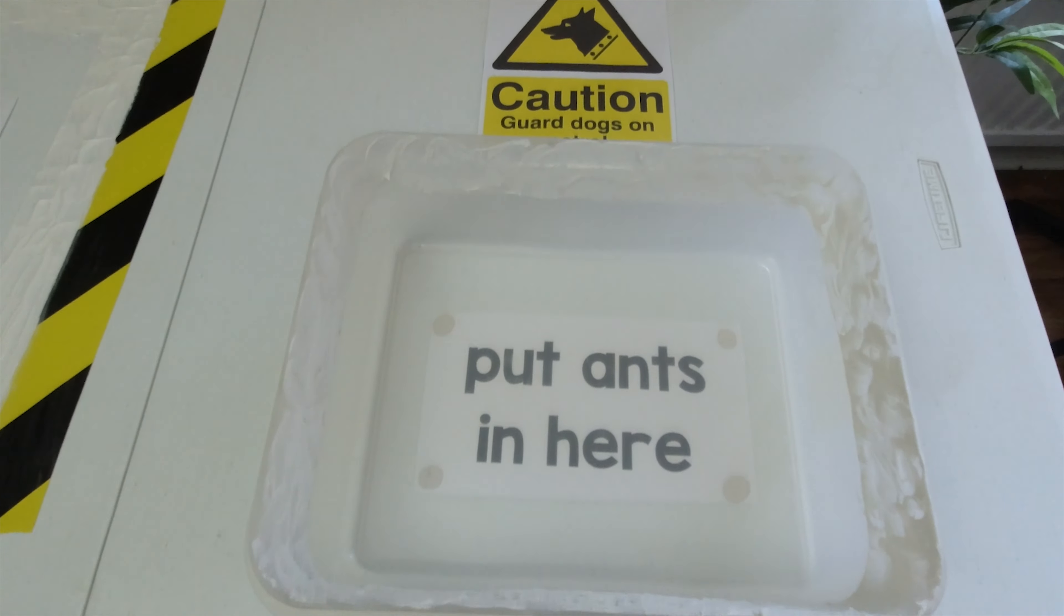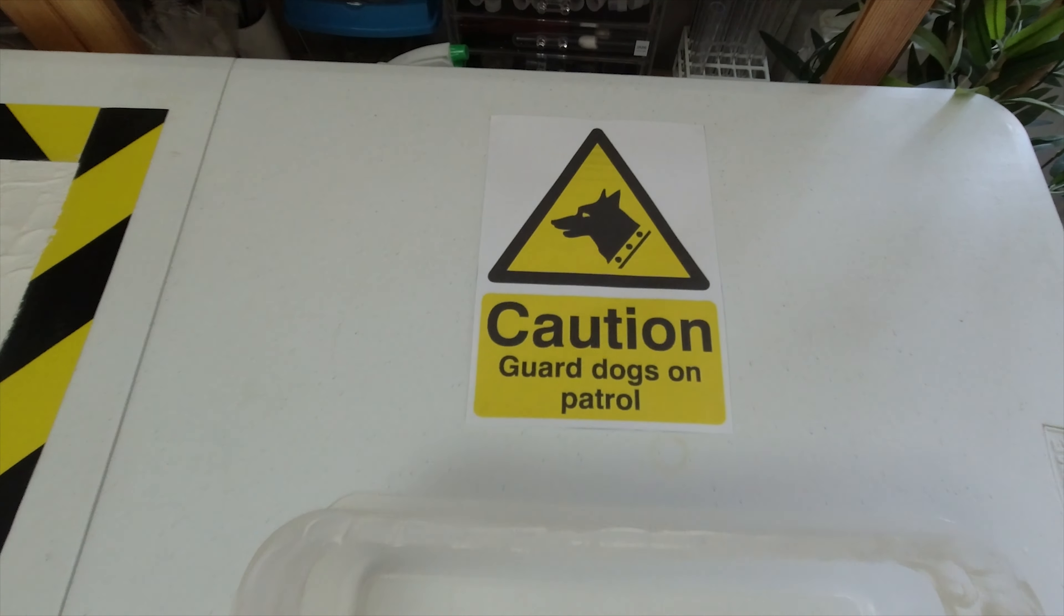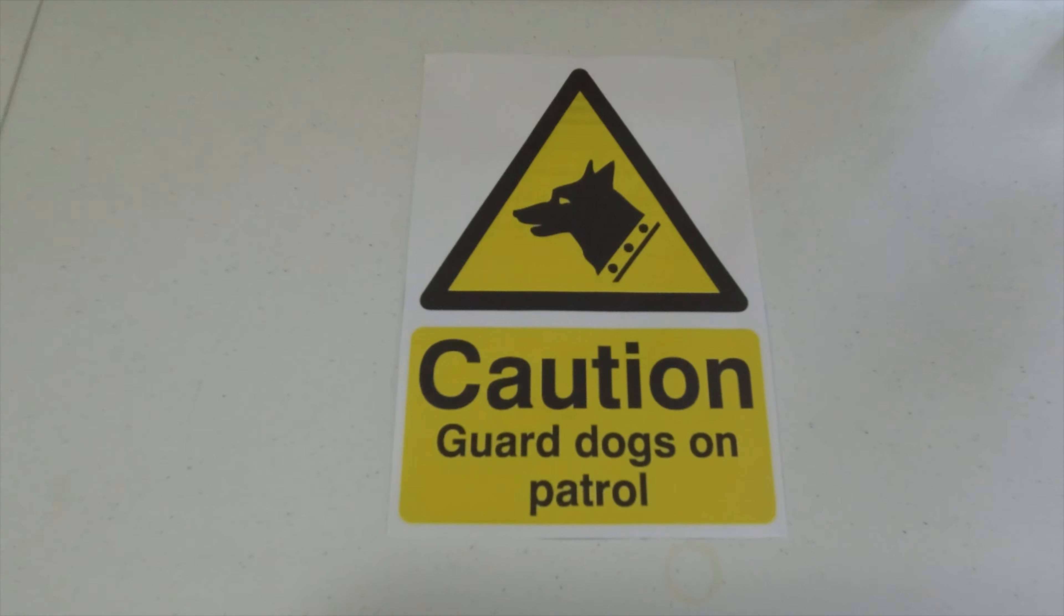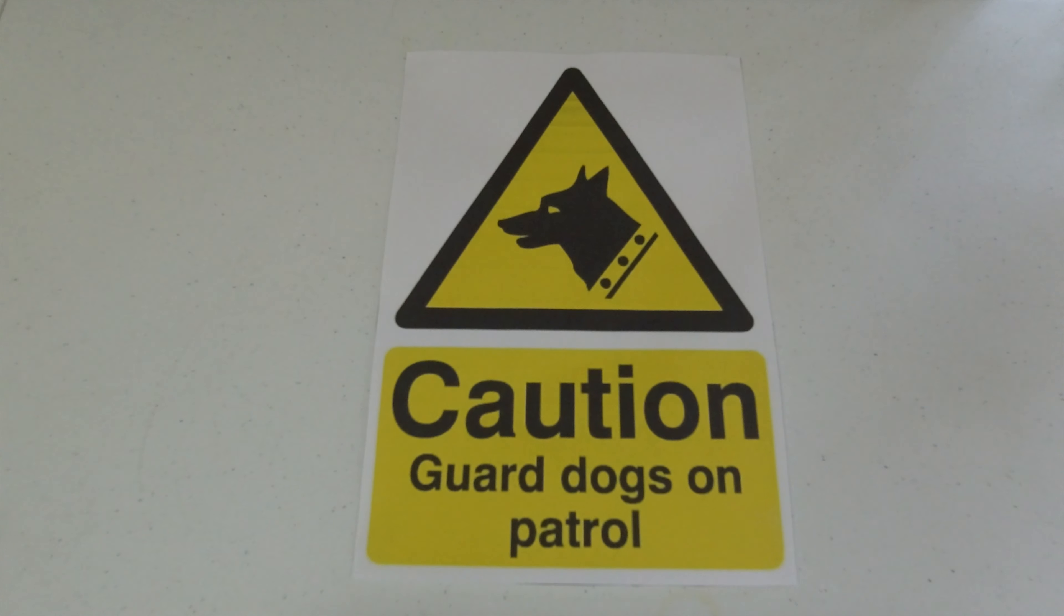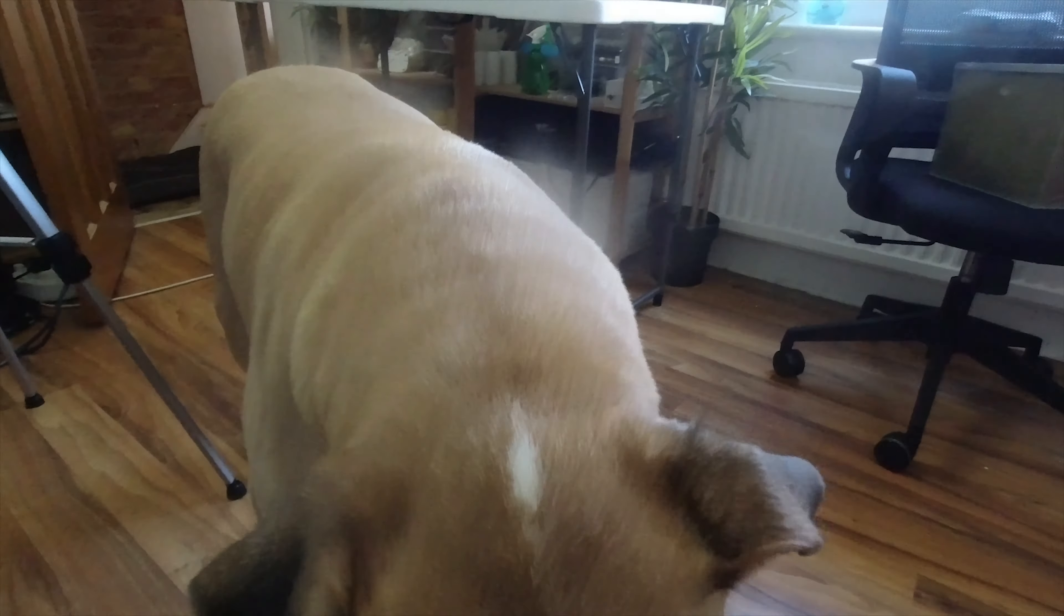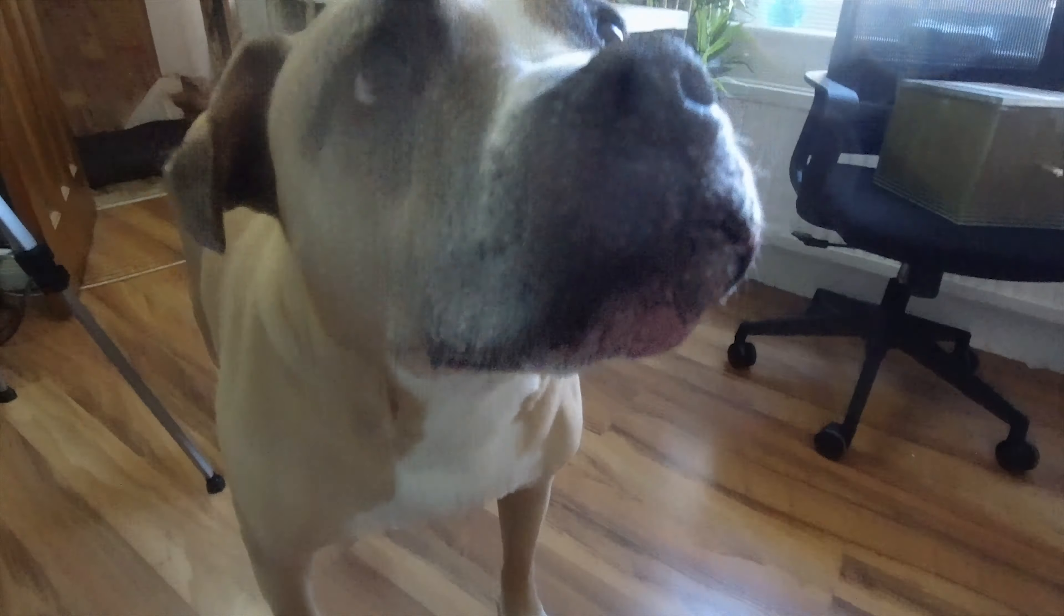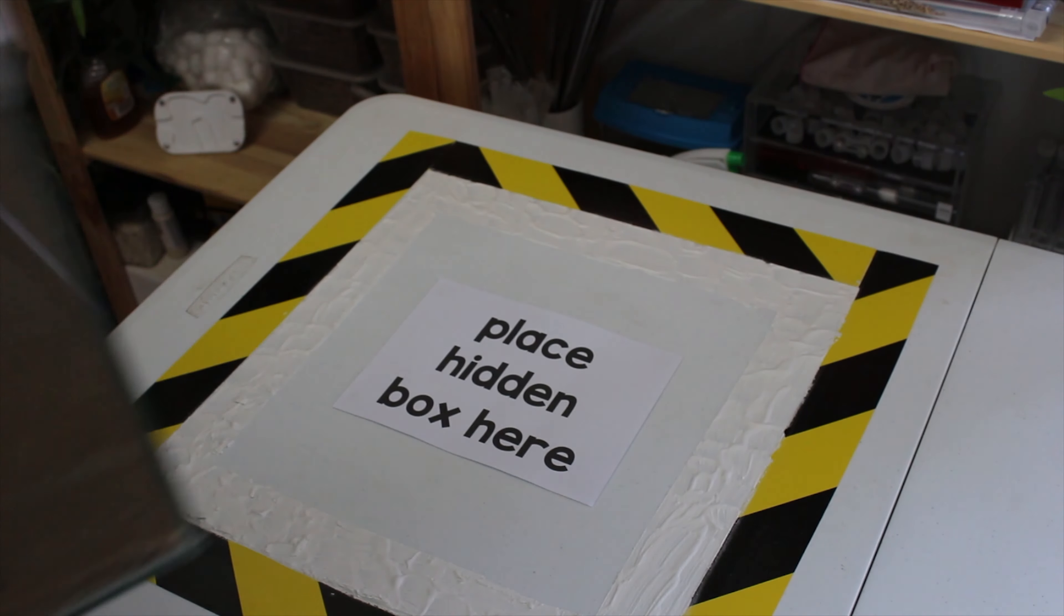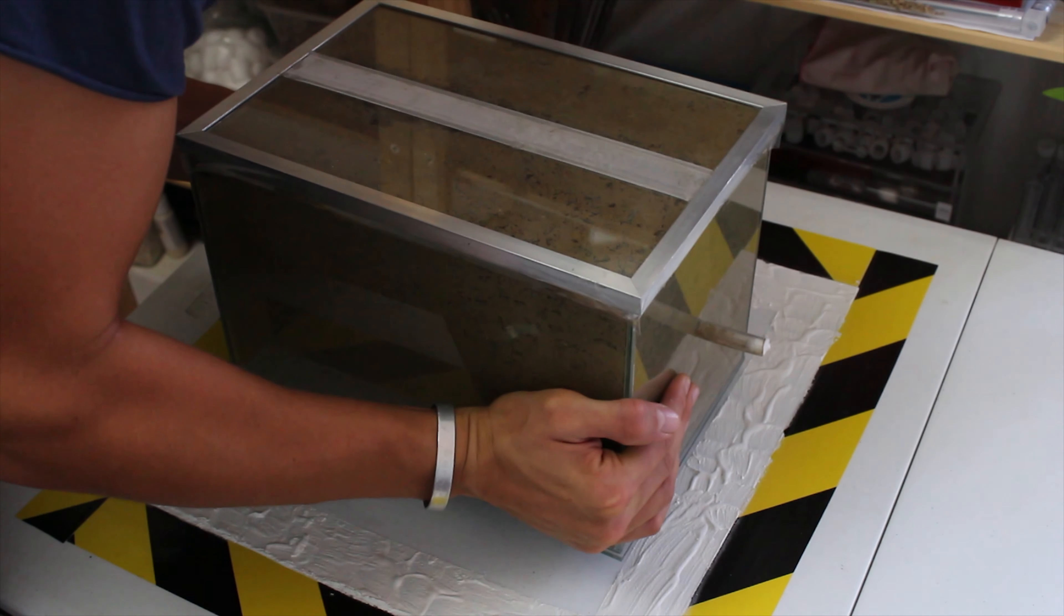On the right hand side, we have an empty container, where we will be placing all of our ants. This has also been coated with the same anti-ant formula. If in the small chance that ants do escape, we do have security dogs on site, which will be able to chase them down and bring them back to the setup.